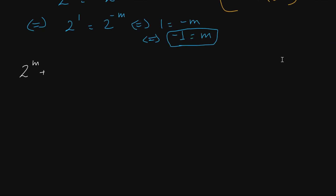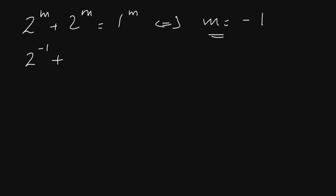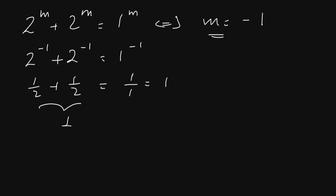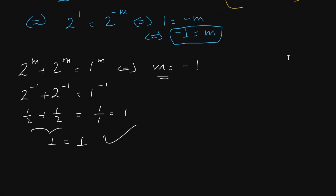So 2 to the power of one equals 2 to the power of minus m. By the exponent rule, one must equal minus m, so minus one equals m. Finally, if 2 to the power of m plus 2 to the power of n equals 1 to the power of m, then the value of m is equal to minus one. Let's check: 2 to the power of minus one plus 2 to the power of minus one equals 1 to the power of minus one — and one equals one, so our solution is correct.